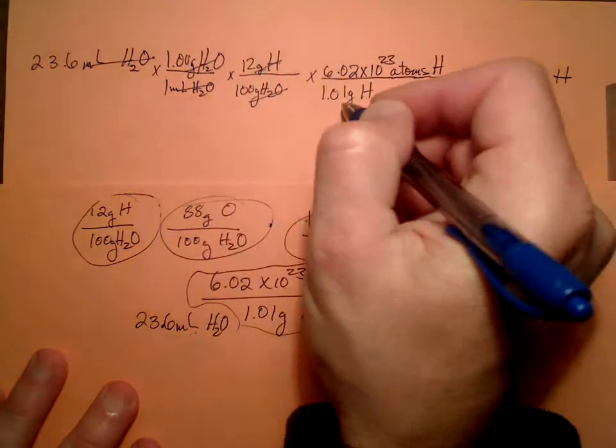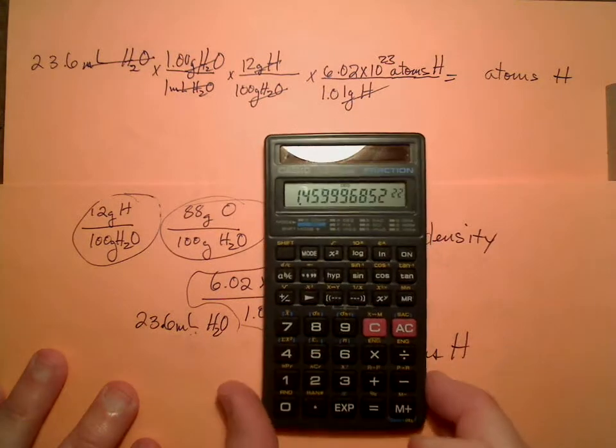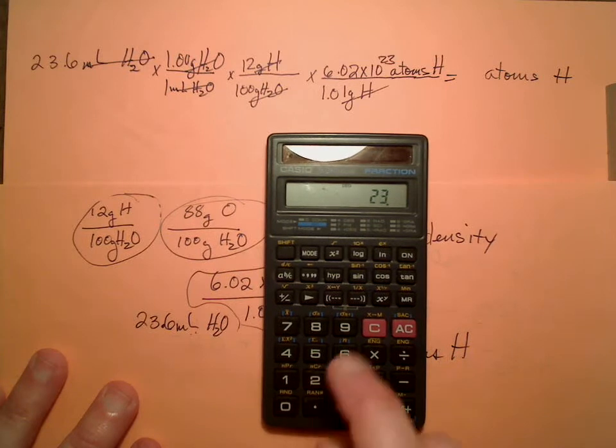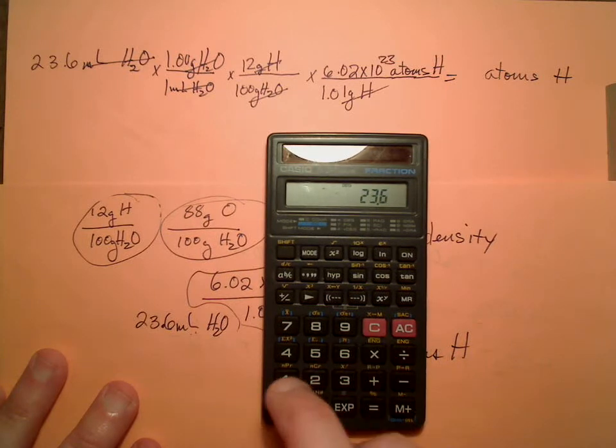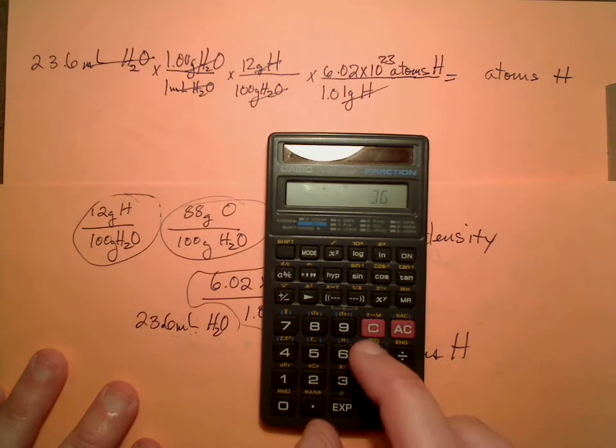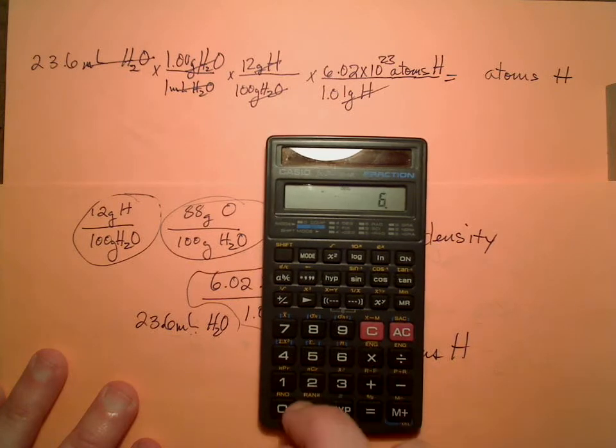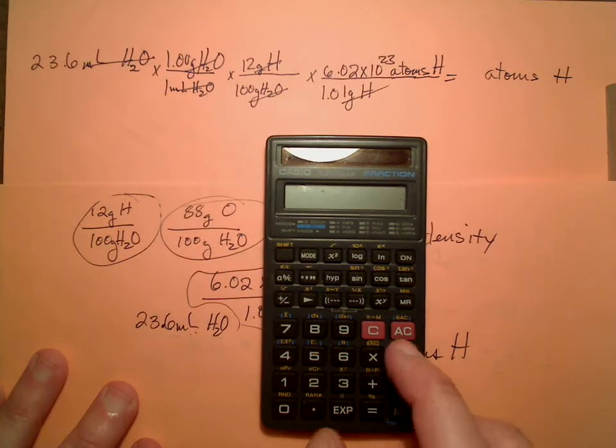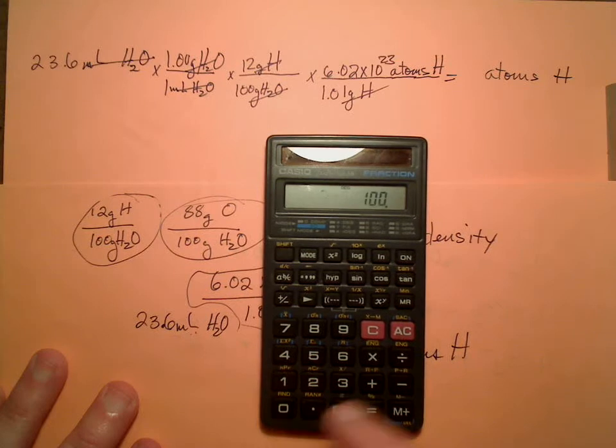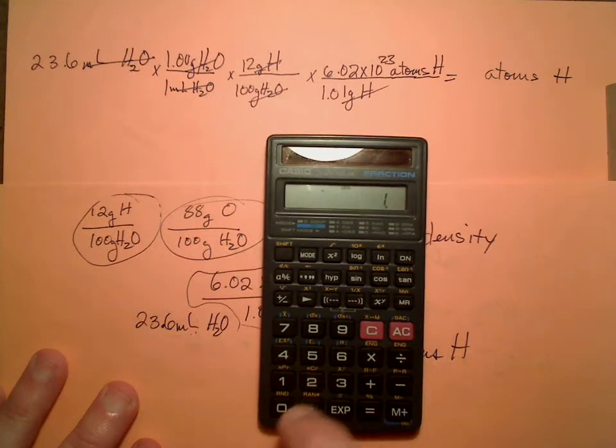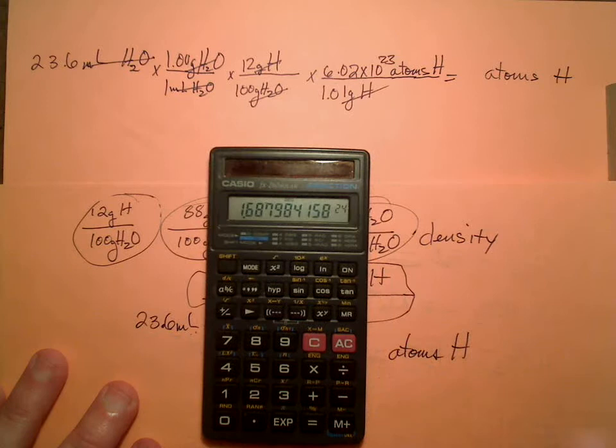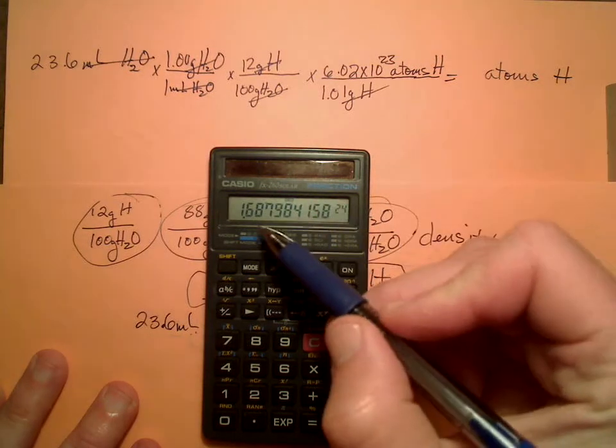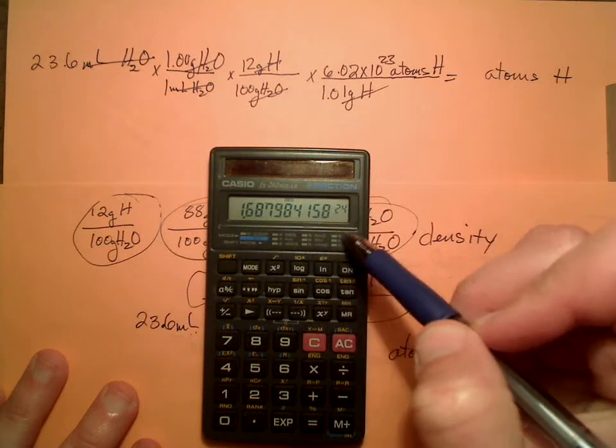Units cancel. Let's go ahead and figure it out. So I have 23.6 times 1.00 times 12 times 6.02 times 10 to the 23rd divided by 100 divided by 1.01 equals, and I should get a big number because atoms are small. And it looks like I get 1.69 times 10 to the 24th.